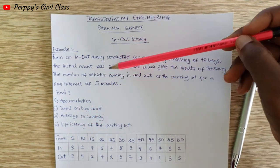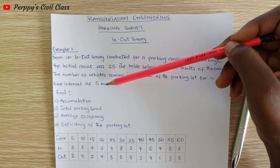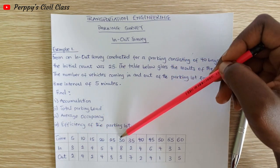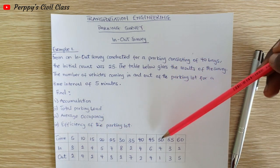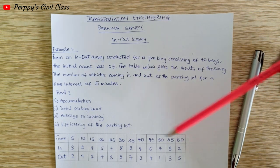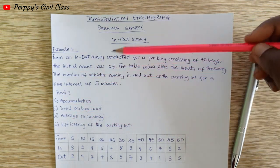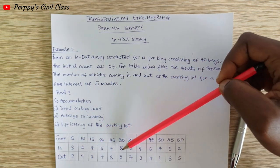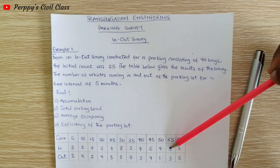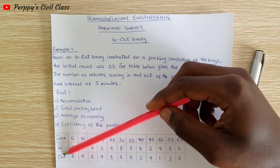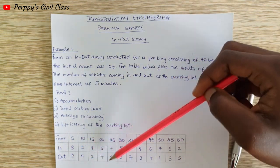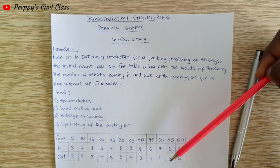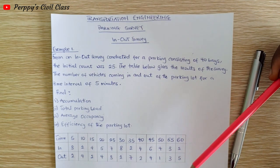The time intervals given are 5, 10, 15, 20, 25, 30, 35, 40, 45, 50, 55, and 60 minutes. The vehicles that entered are: 3, 2, 4, 5, 7, 8, 2, 4, 6, 4, 3, and 2. The vehicles that left are: 2, 4, 2, 4, 3, 2, 7, 2, 4, 1, 3, and 5.